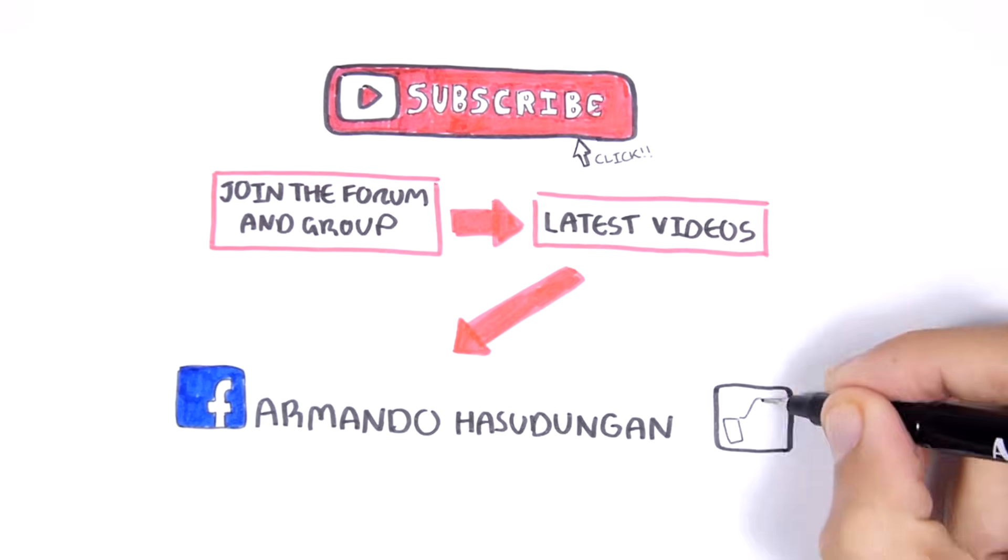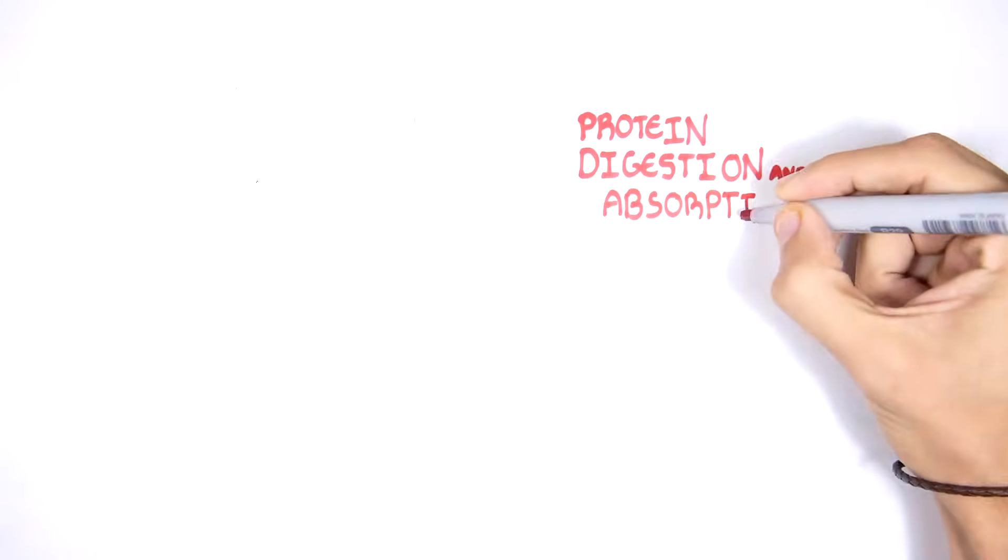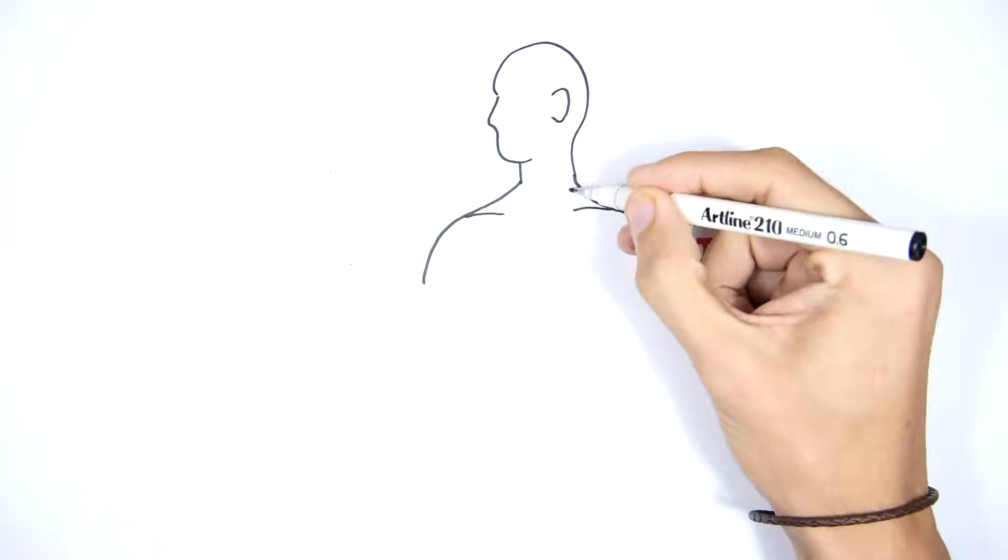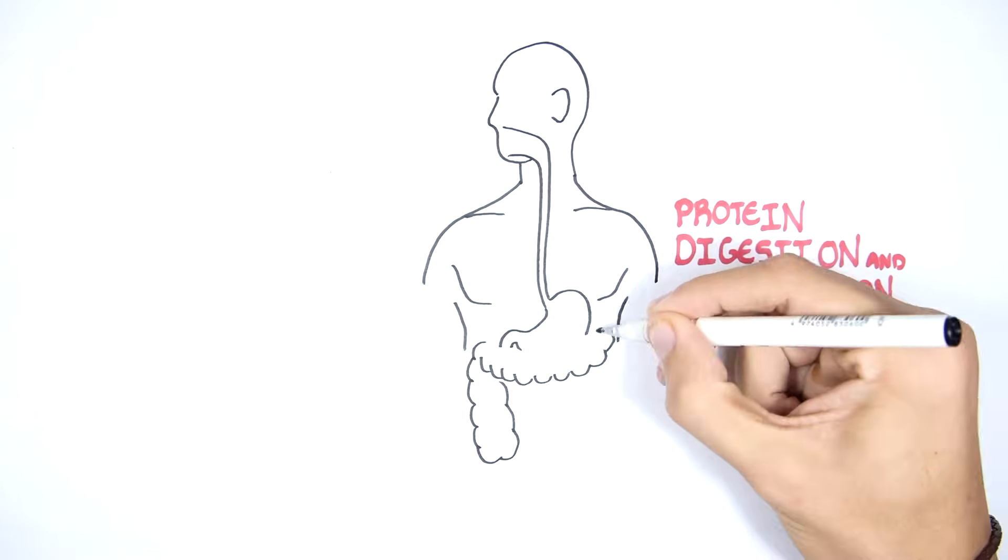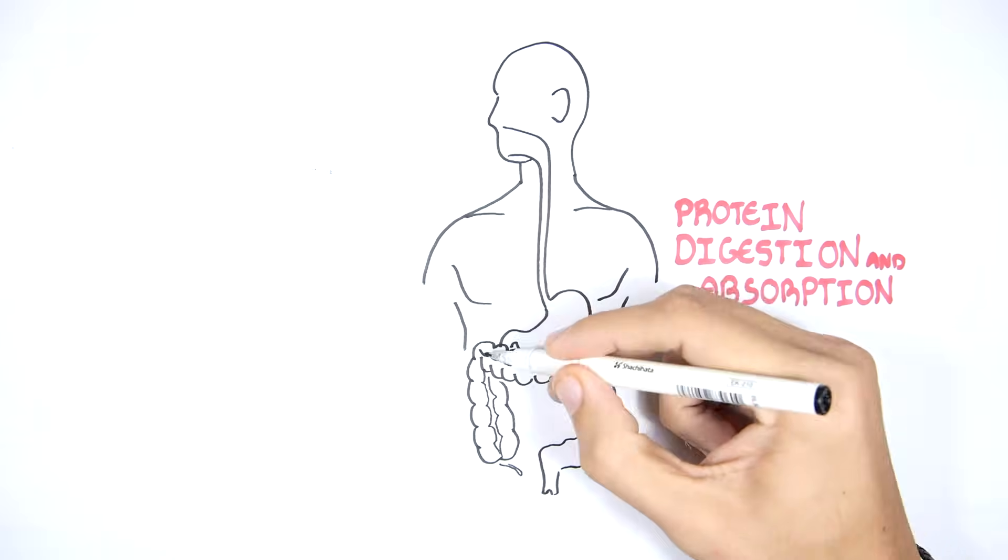In this video we will talk about protein digestion and absorption. So here we have a person and his digestive tract. You have the esophagus, stomach, small and large intestine.